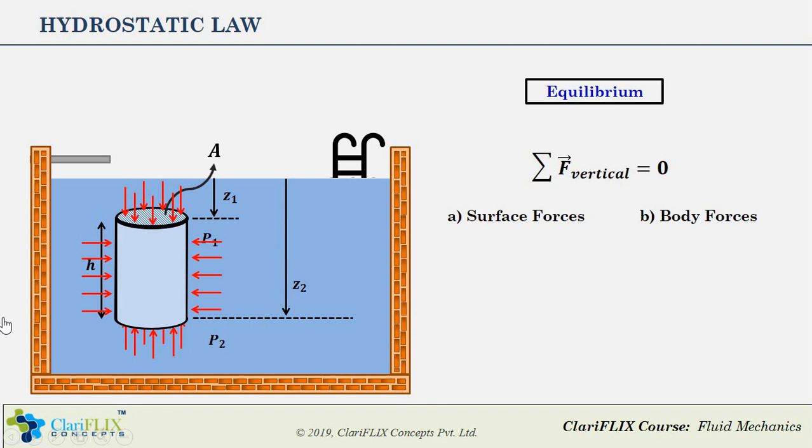These are the three main surfaces of the cylindrical element where pressure forces are acting. Out of these three, the top and bottom surfaces of the cylinder are where the pressure force is aligned in the vertical direction. Let F1 be the pressure force acting on the top plane. We know that the pressure on the top plane is P1 and the surface area is A, and therefore F1 equals P1 times A, which acts in the downward direction.